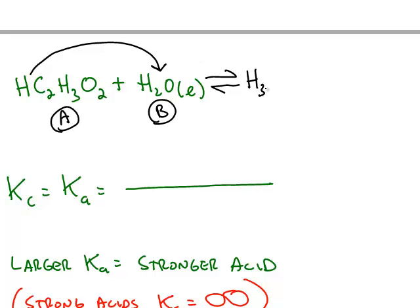One of them will be the water turns into hydronium. And the acetic acid, we rip off the H+, we're left with the acetate anion.